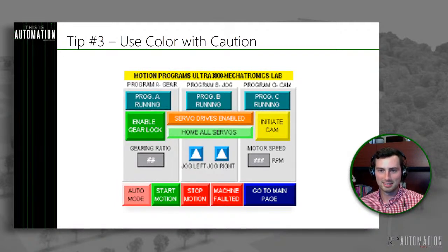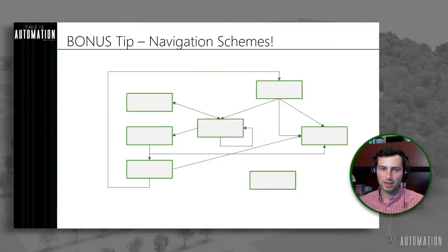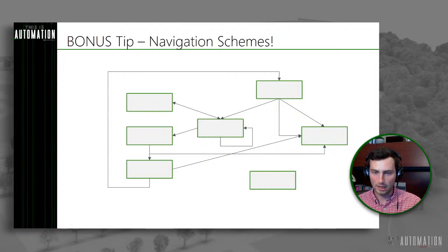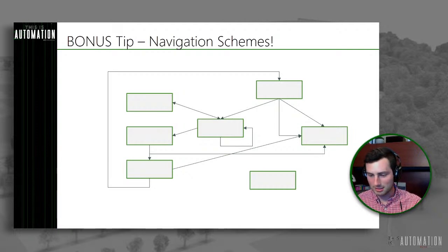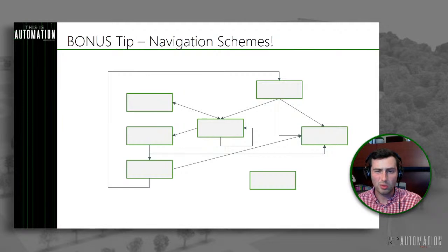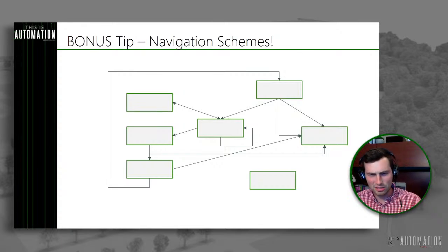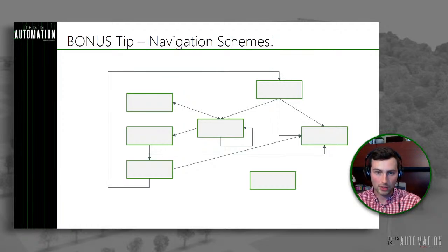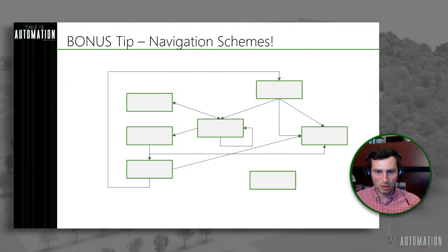Now onto our bonus tip. Navigation schemes is another one that can really contribute to designing a modern-feeling HMI. A lot of industrial HMIs have been designed in an on-the-fly way — as you need something else, just throw it in and add a button onto a page to navigate there. What you end up with is a navigation map with pages that loop back on themselves, pages that you can't get to for some reason, and often just confusing ways that the navigation hierarchy works. It can be really frustrating for a user. I'm sure we've all experienced that on a website or app where we want to get somewhere but don't know how, or we want to get back to where we were and don't know how. That makes training complex as well.